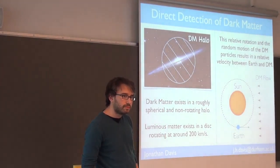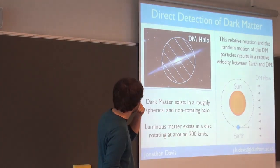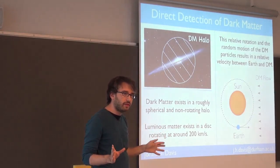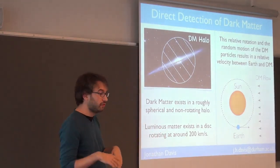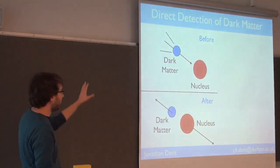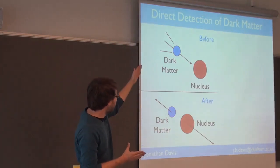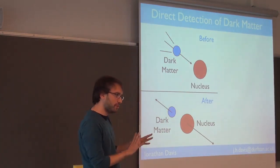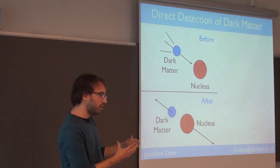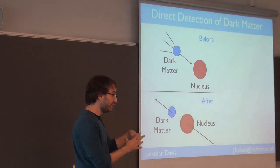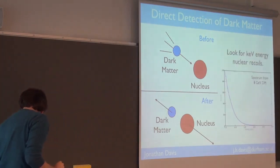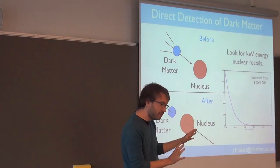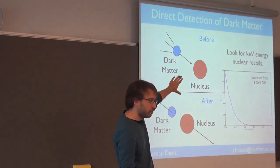Does the dark matter halo usually extend beyond the luminous matter? Well, it does go further than I've drawn — you don't really know where the dark matter halo ends, and it's not perfectly spherical. The dark matter comes in, hits a stationary nucleus, and before and after it recoils, giving the nucleus a small — very small — amount of energy, at the keV level. You have an invisible particle you never see, but if you suddenly see a nucleus recoil, perhaps that was dark matter coming in from the galaxy. That's what dark matter direct detection experiments look for — this very low-energy, keV-scale recoil.